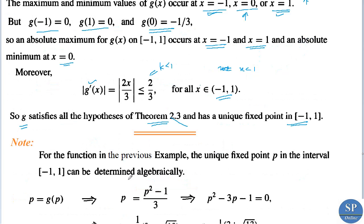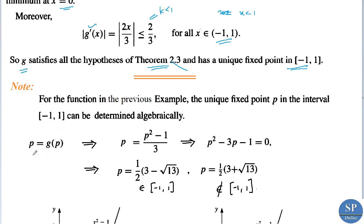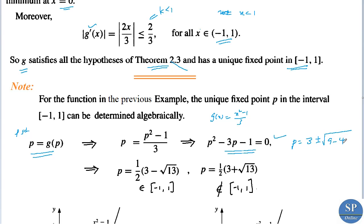To find the fixed point, we use the definition: the fixed point p satisfies g(p) = p, that is p = (p² - 1)/3. Solving this gives p² - 3p - 1 = 0. Using the quadratic formula, p = (3 ± √13)/2, giving the two values (3 + √13)/2 and (3 - √13)/2.